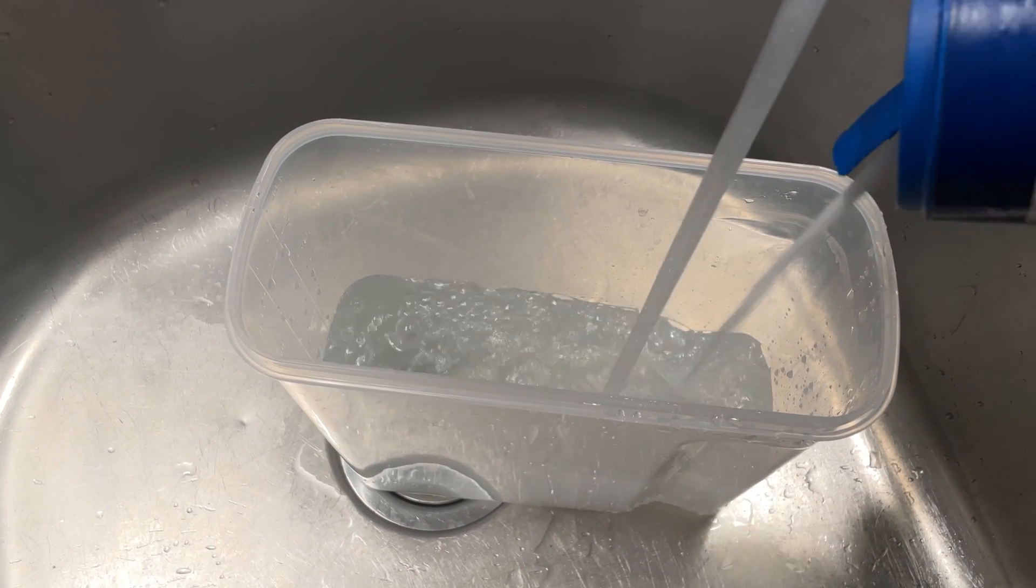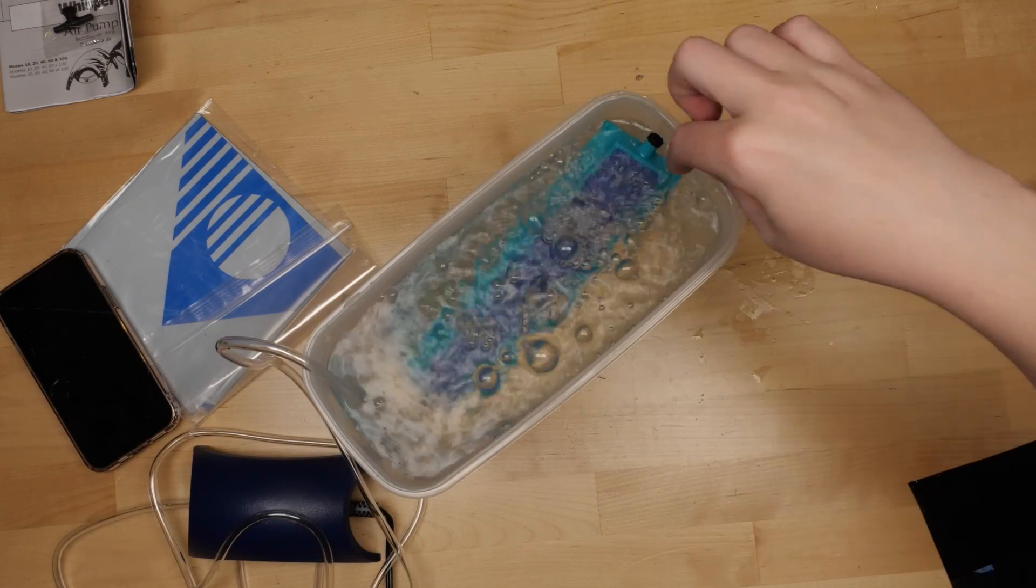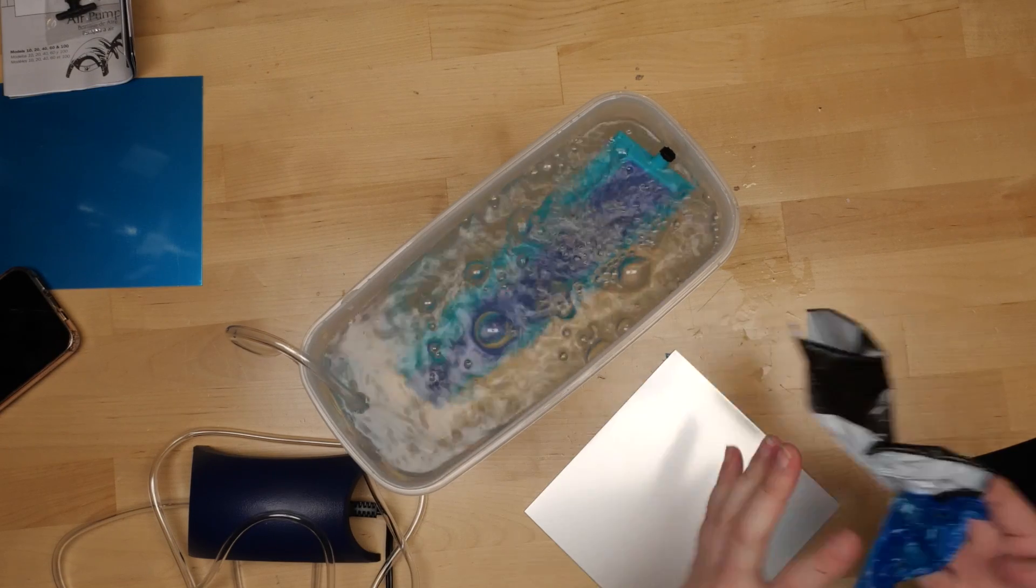To set up my etching bath, I filled my plastic bin with warm salt water and added the aquarium aerator, which functions to keep the liquid moving and also helps separate the two electrodes, so that they shouldn't touch each other.